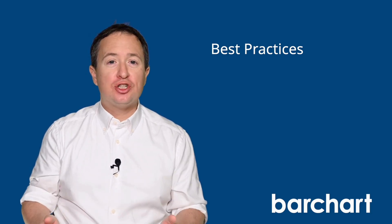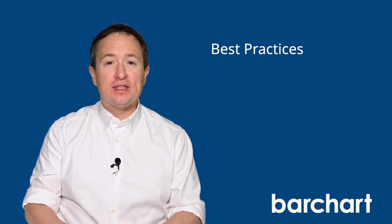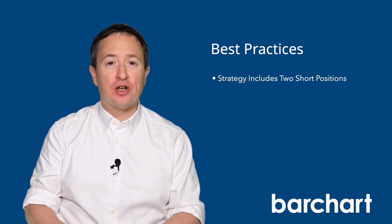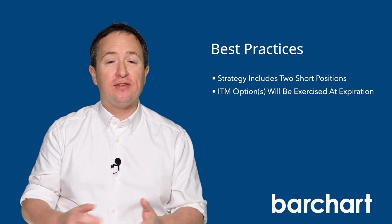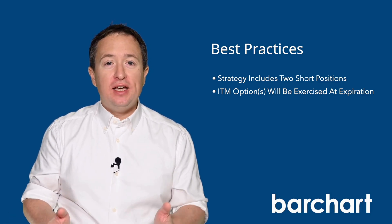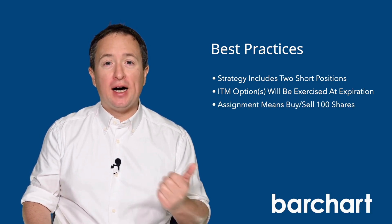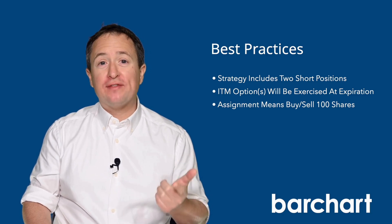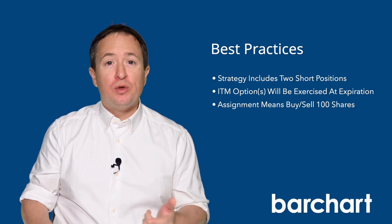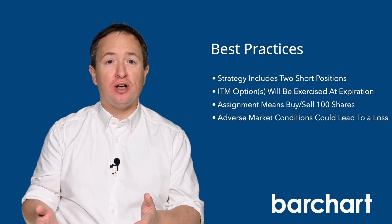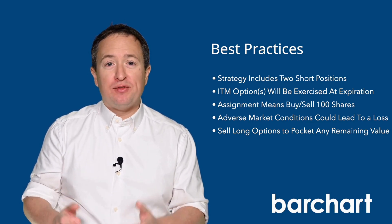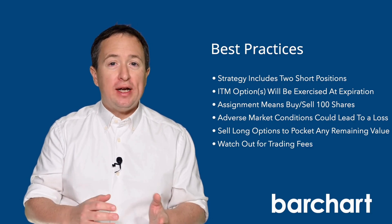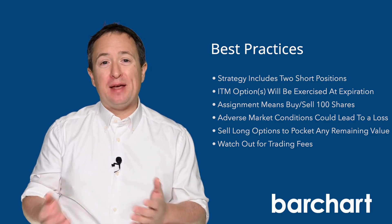It's always a good idea to close your positions right before expiration when using any strategy that requires writing or selling options. For example, you have two short positions in this trade, and if either is in the money by expiration, the option will be automatically exercised — or from your perspective, you'll be assigned. If any of the short options do get assigned, you'll either have to buy 100 shares of the underlying for every put that you wrote, or you'll have to sell 100 shares for every call that you sold, which would also mean buying shares if you didn't already own them. You can also sell the long positions to capture any remaining value, which may mitigate some of your losses, but keep an eye out for trading fees, because if they're higher than the premiums, it may not be worth it.